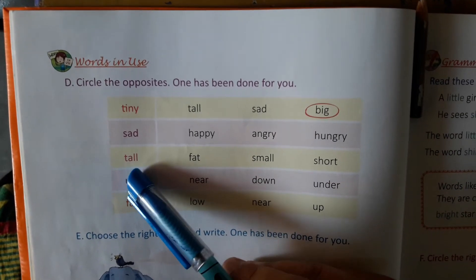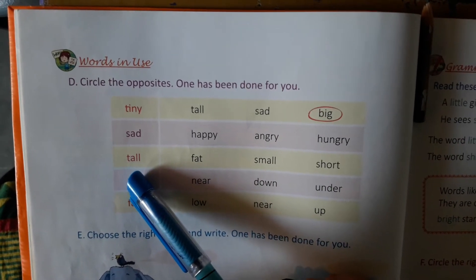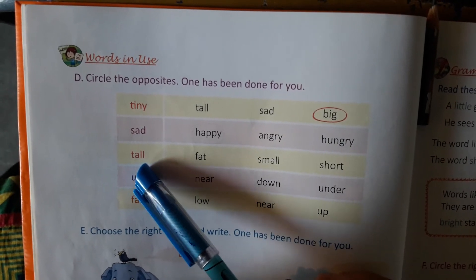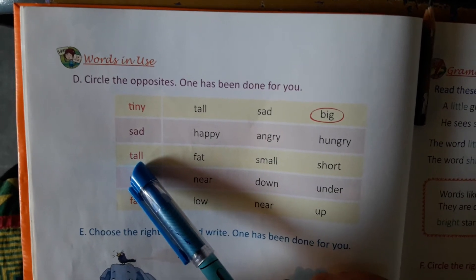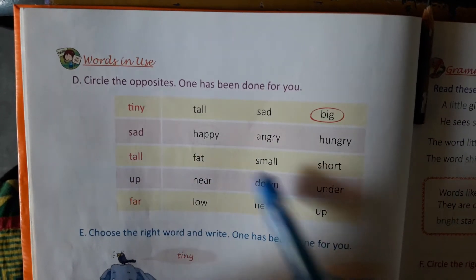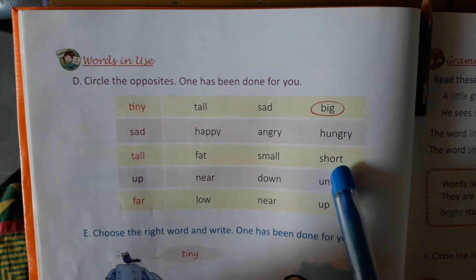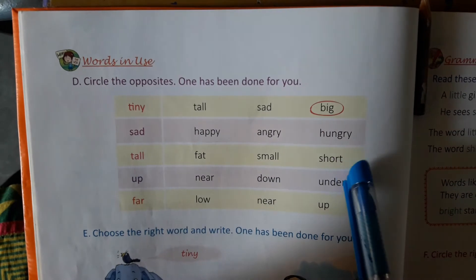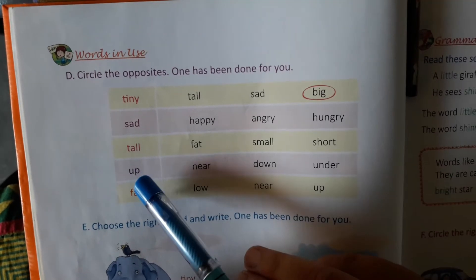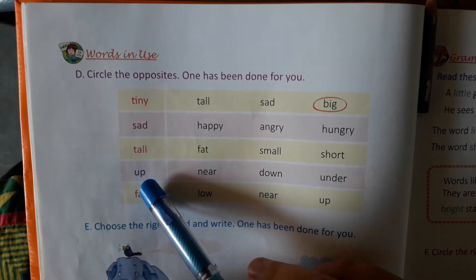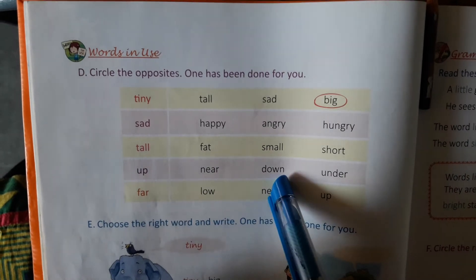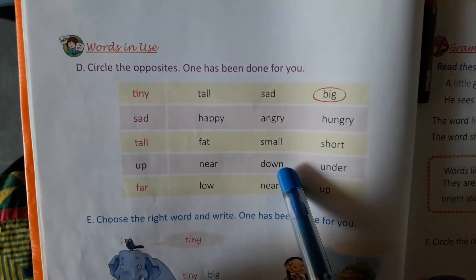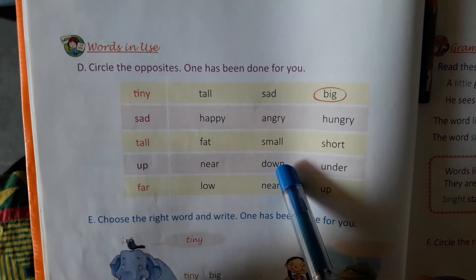Then tall. Tall यानि की उच्चा. Tall का opposite क्या हुआ? Short. तो आप short को circle करोगे. Tall, short. Up — इसका opposite word? Down. Up, down. Down को आप circle करना.